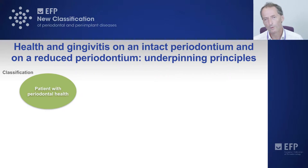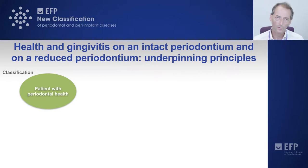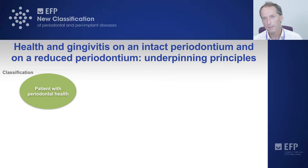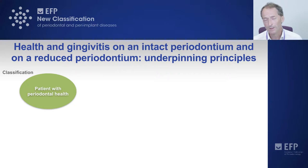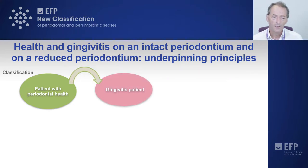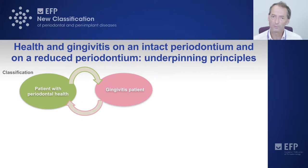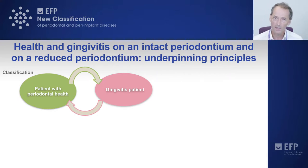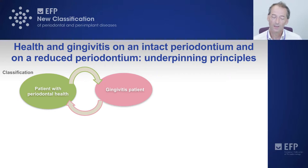It was important to make the point that classification is not diagnosis — they are two completely different things — but a classification is important to inform the diagnosis. We can classify a patient as periodontally healthy if they have an intact periodontium and less than 10% of sites that bleed. If plaque accumulates the patient may develop gingivitis, which is reversible if we remove or reduce plaque, because there has been no connective tissue attachment loss and the apical cell of the junctional epithelium has remained attached to the enamel just above the cementoenamel junction.